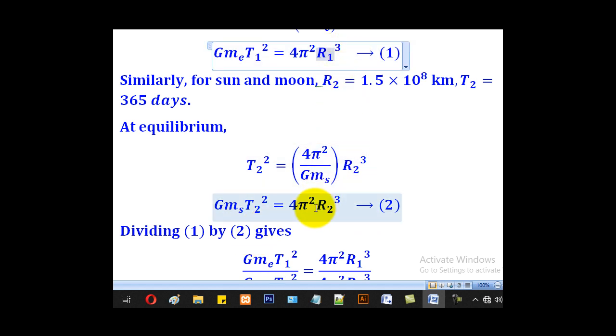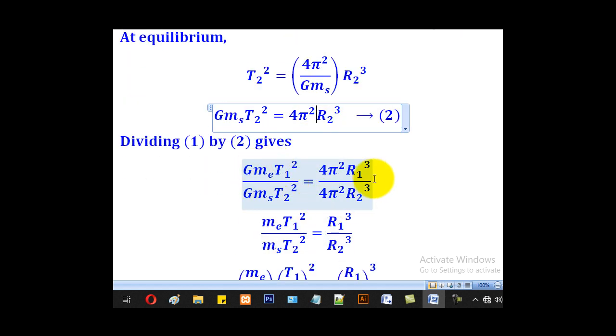When we divide this by this we shall come up with this step. In this step we shall notice that this is common to this, so it will cancel out. This is common to this, so it will cancel out and remain with that step.